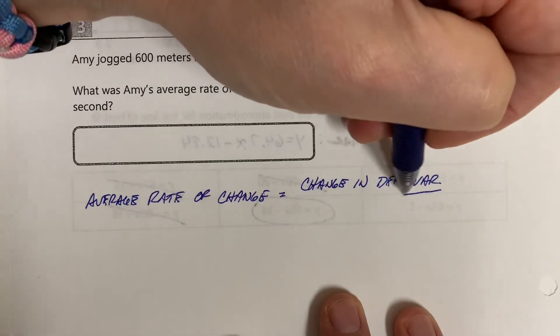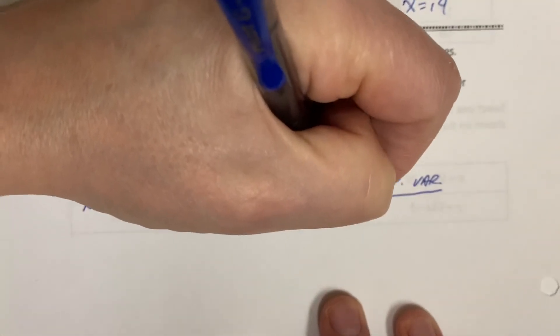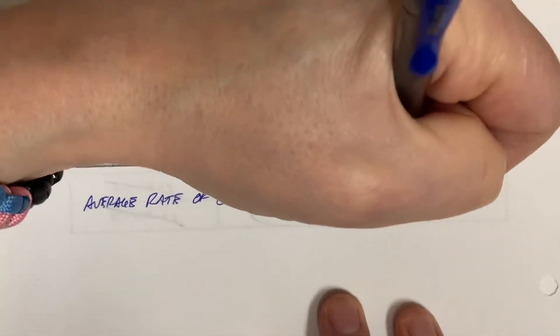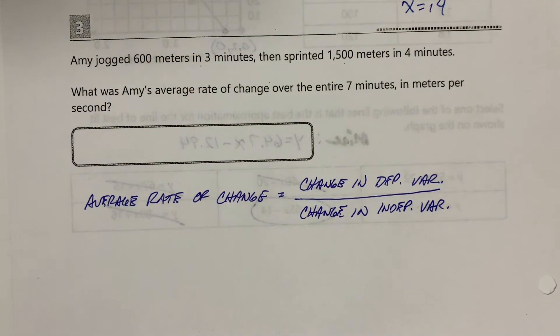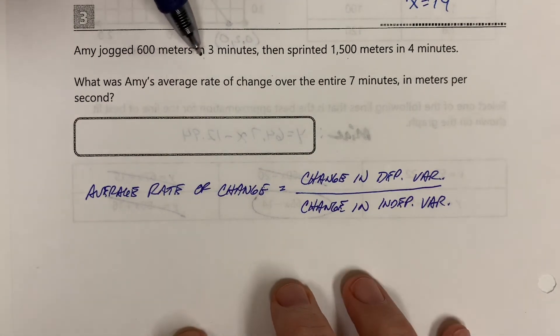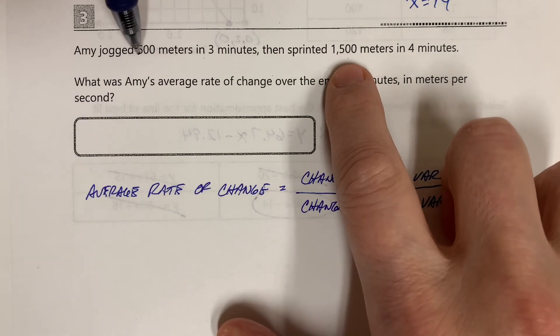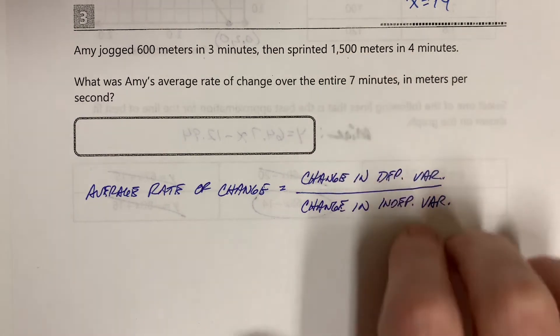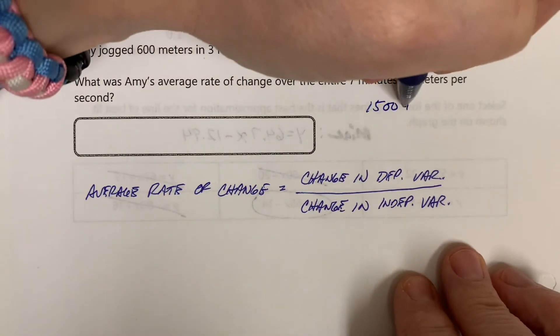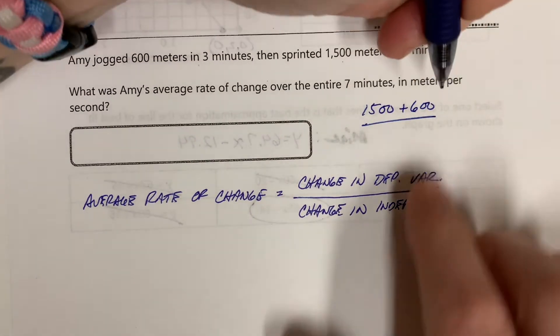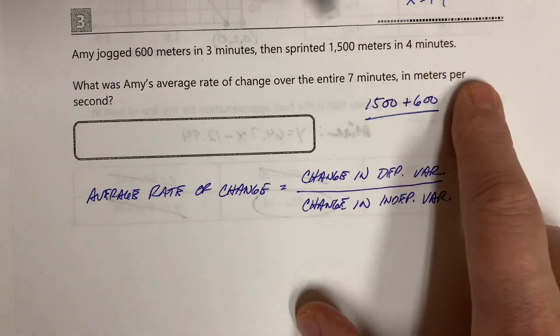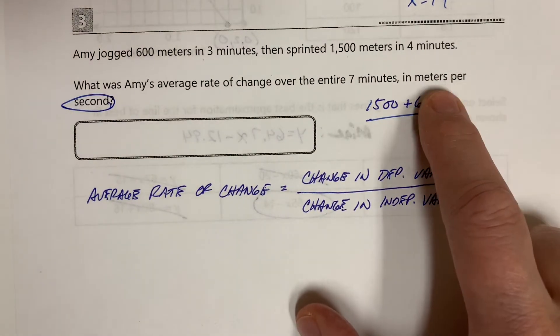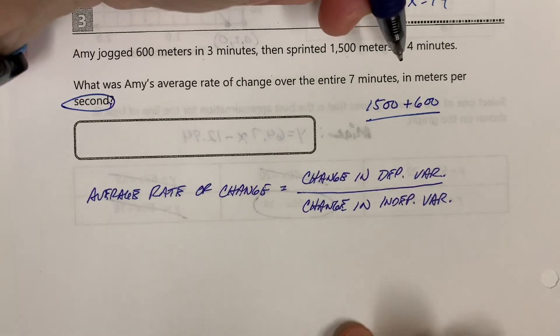It behaves almost exactly like slope because that's what slope is defined as. What we need to do is calculate what is the total change in the dependent variable, which is the distance. Amy jogged 1500 and 600, so that's 1500 plus 600. Let's talk now about minutes: four minutes and three minutes, but we want it in meters per second. Critical information. So how many seconds are in three minutes? 60 times 3 is 180, and then 60 times 4 is going to be 240.